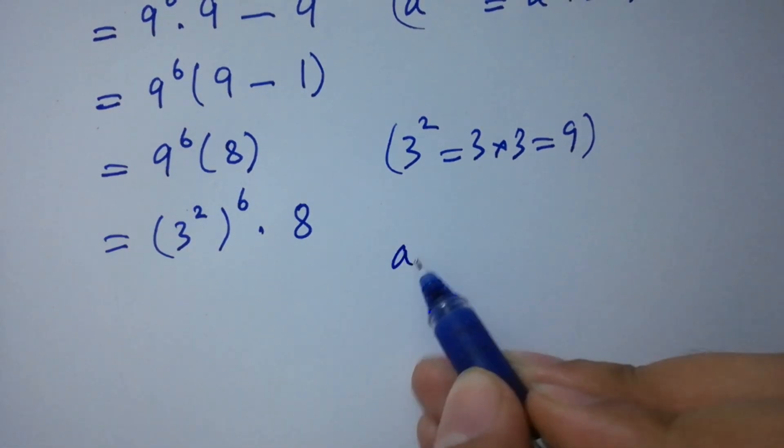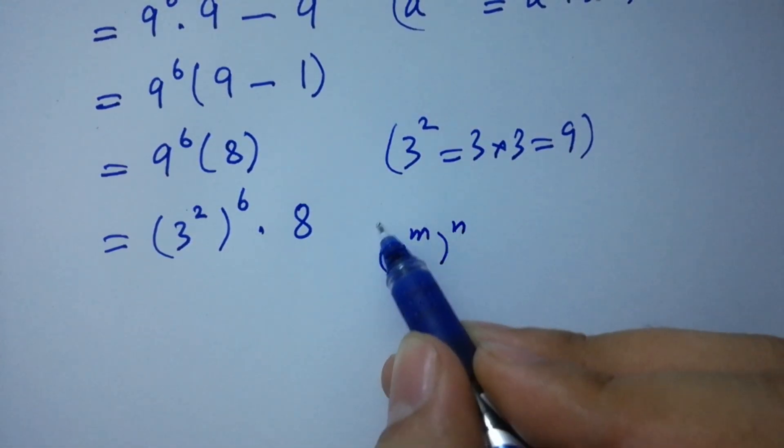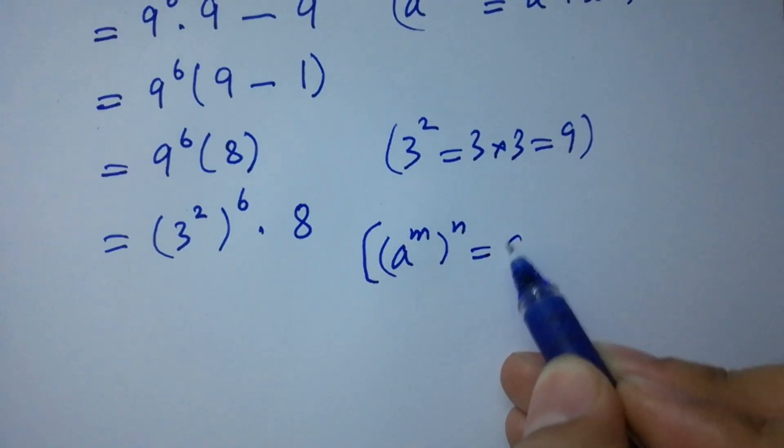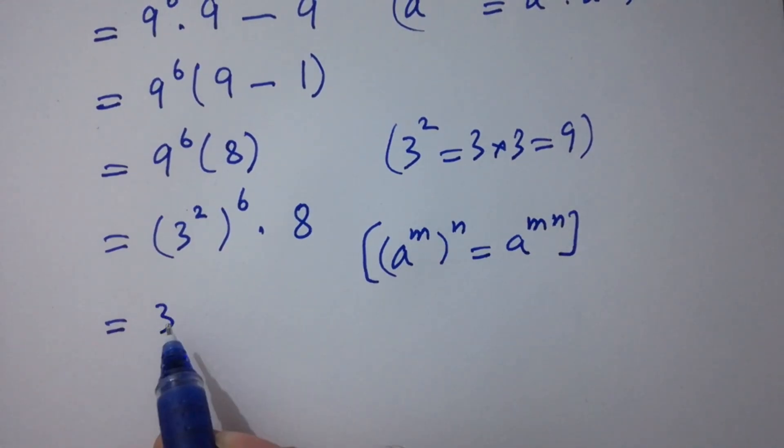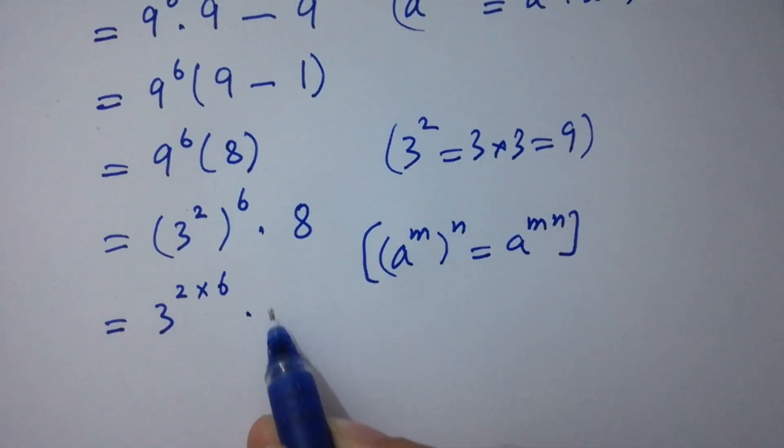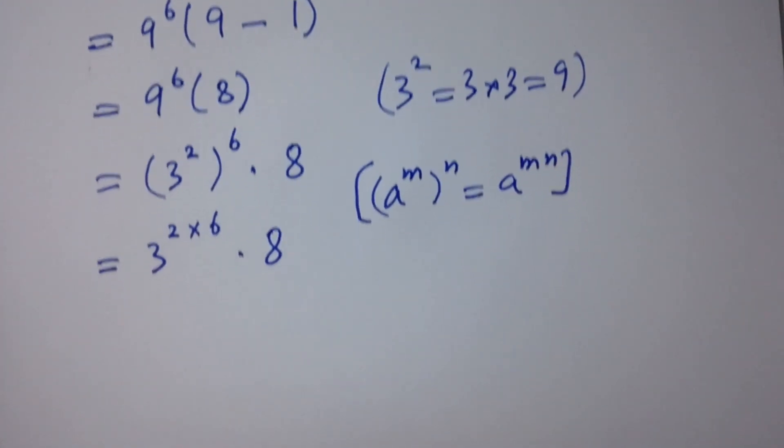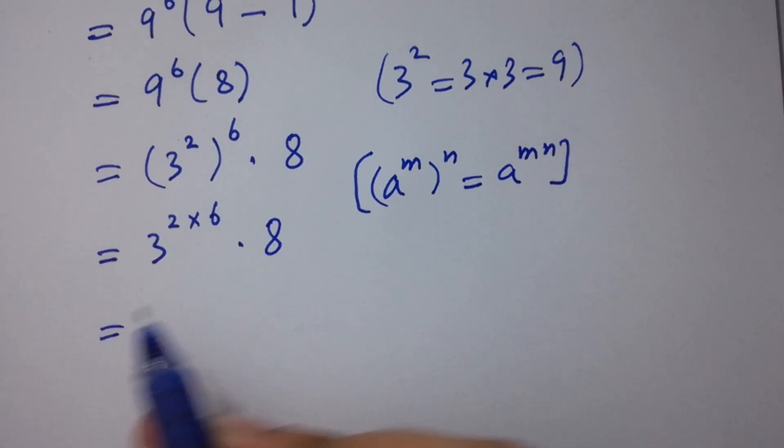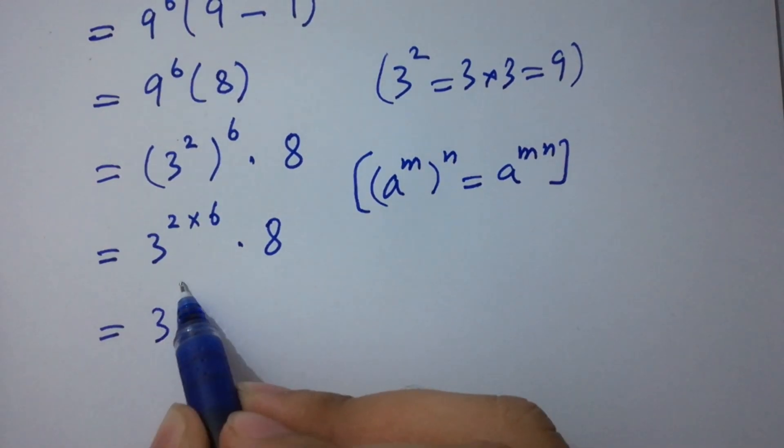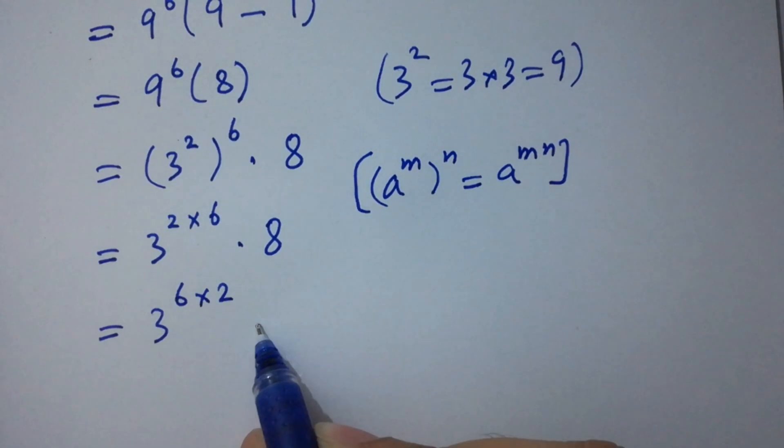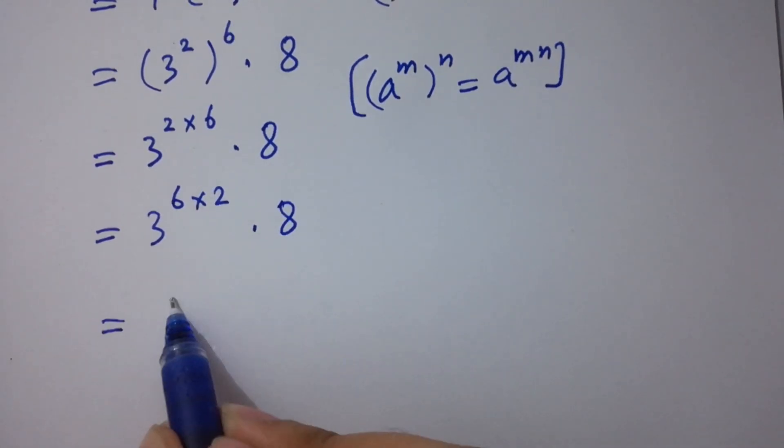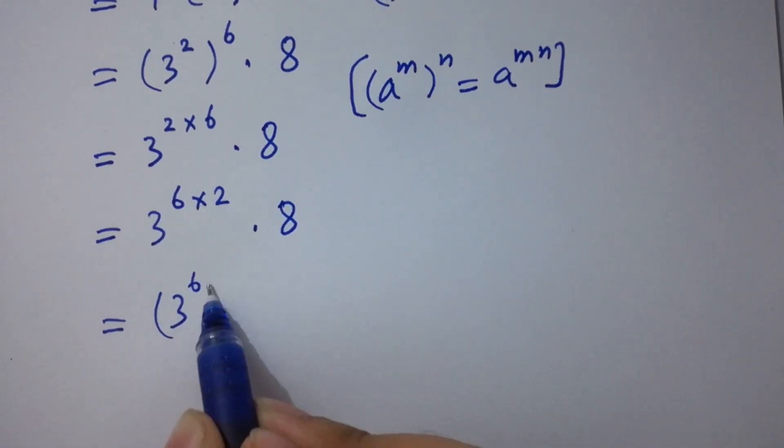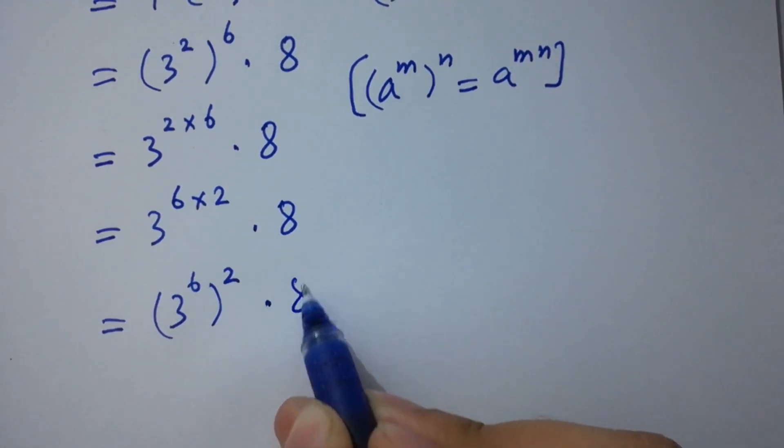A to the power m to the whole power n equal to a to the power m n. Then it will be 3 to the power 2 times 6 times 8, which is same as 3 to the power 12 times 8, or 3 to the power 6 to the whole power 2 times 8.